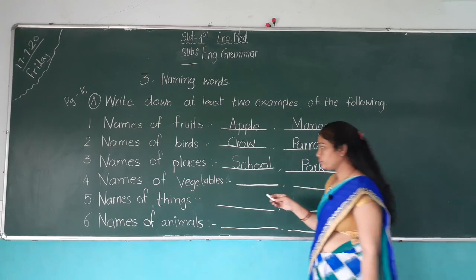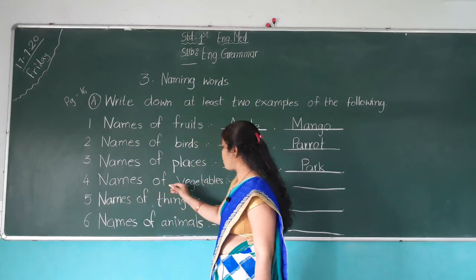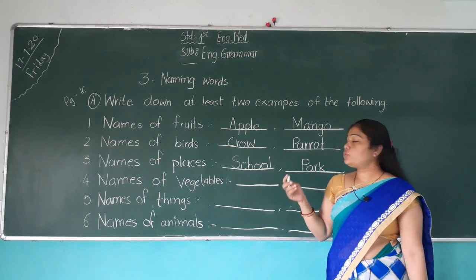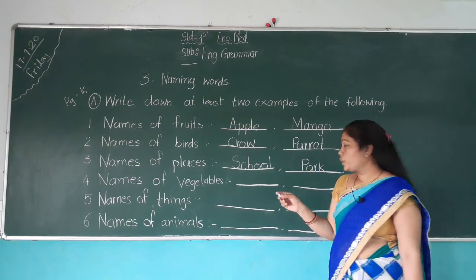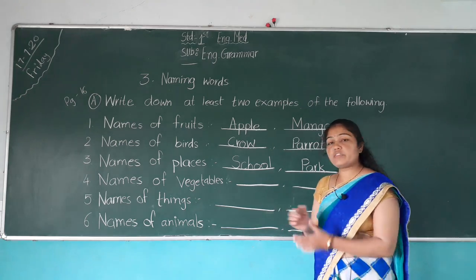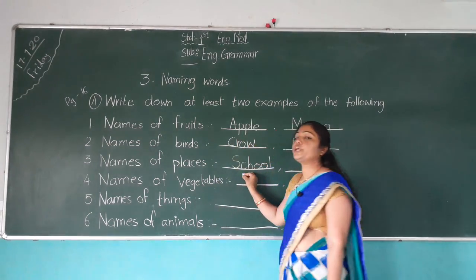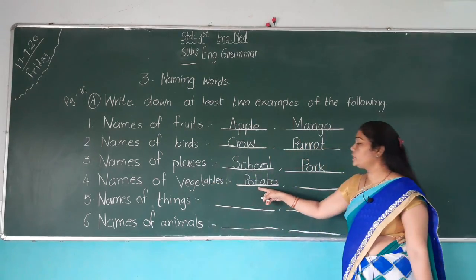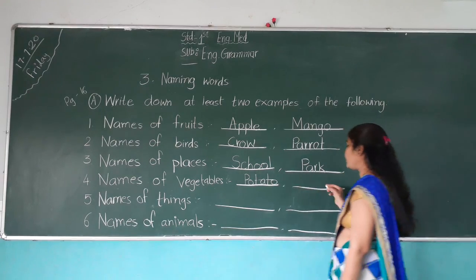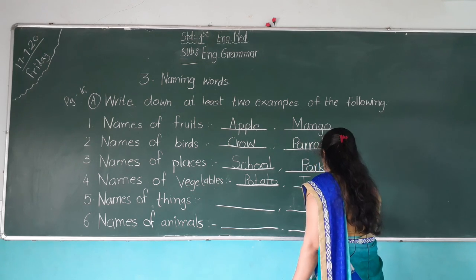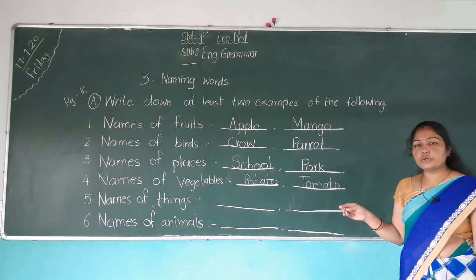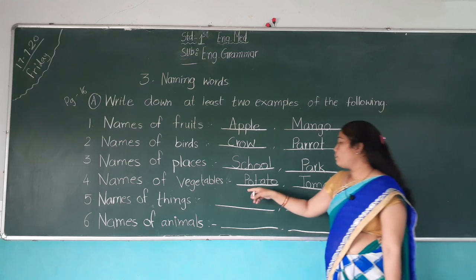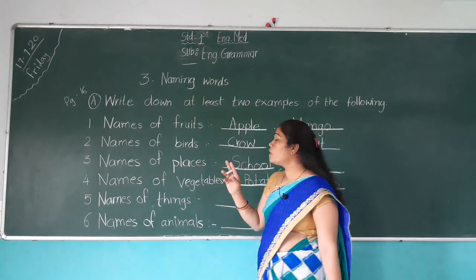Number four: Names of vegetables. Two vegetable names we have to write here. Do you eat potato? Everyone likes potato very much. The spelling of potato is P-O-T-A-T-O — potato. Then another is tomato. The color of tomato is red. Have you seen a tomato? Do you eat tomato? The spelling of tomato is T-O-M-A-T-O — tomato. We have written two vegetable names.